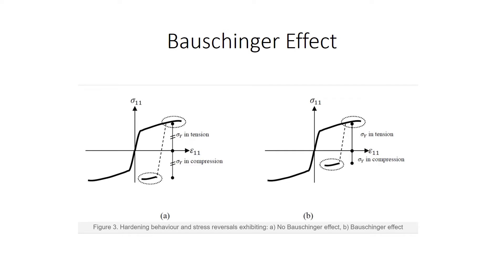I will start by reminding you of the Bauschinger effect. Metals that do not exhibit the Bauschinger effect maintain a yield stress in tension that is equal to the yield stress in compression, as shown in the left curve. Metals that exhibit the Bauschinger effect, as shown on the right curve, after applying some plastic deformation in the tensile direction, would have a yield stress in compression that is usually smaller than that in tension.